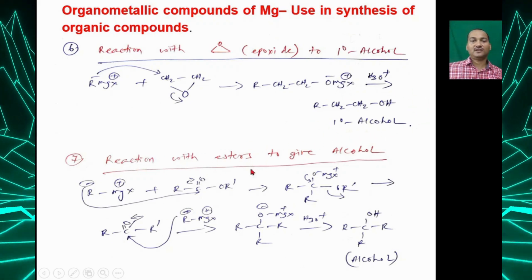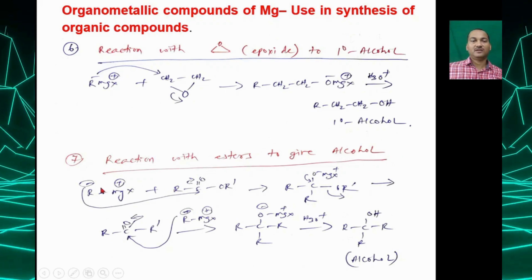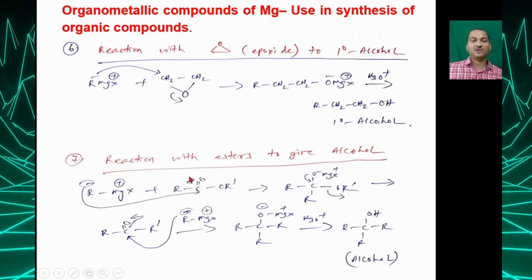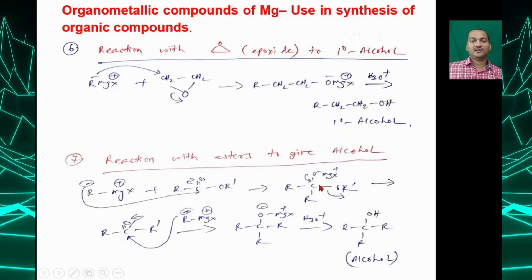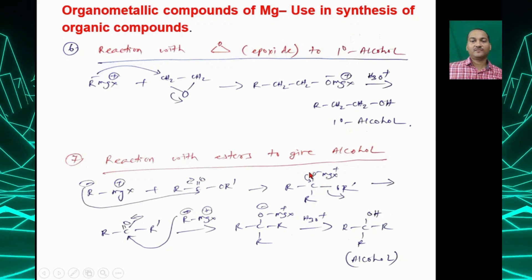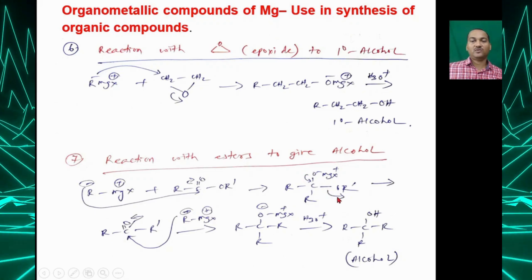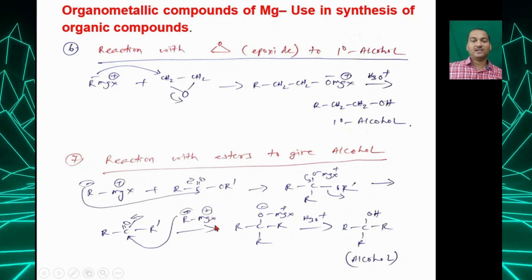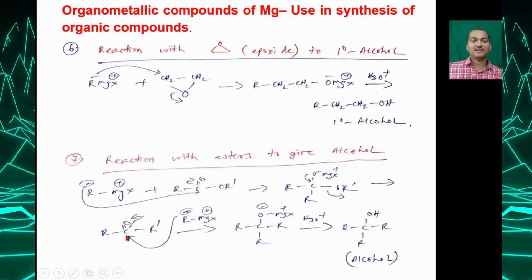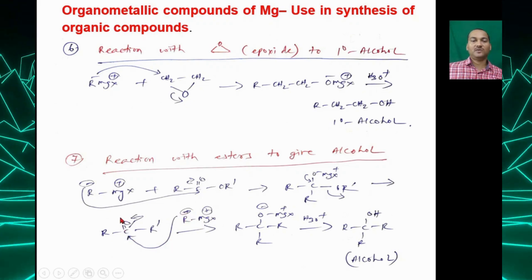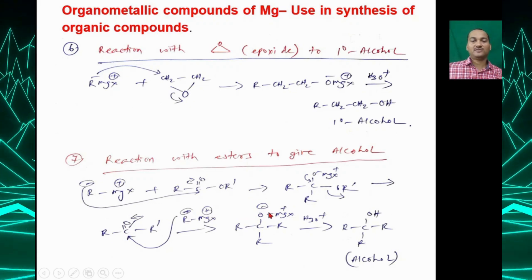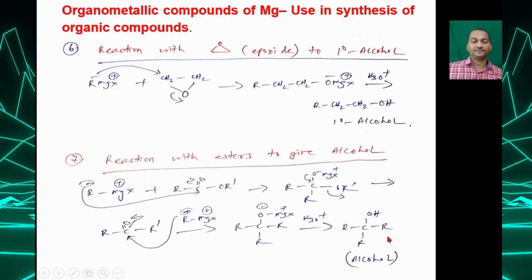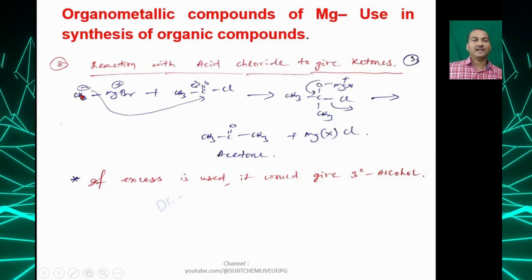With esters, R⁻ attacks the carbonyl carbon and the double bond breaks on oxygen forming an oxyanion; the O⁻ then kicks out OR⁻, giving a ketone intermediate. A second equivalent of Grignard reagent then attacks that ketone carbonyl, and upon hydrolysis you end up with a tertiary alcohol.